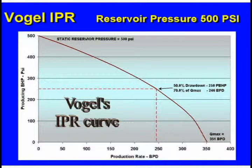Let's say we have a well with only 250 pounds — we've got a lot of those around. In Wichita Falls they don't even have that much pressure on them anymore.